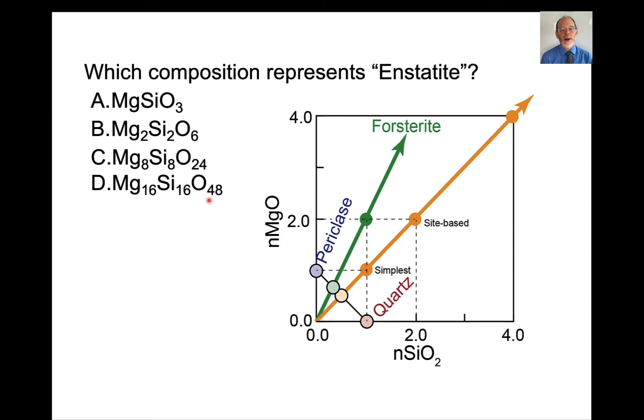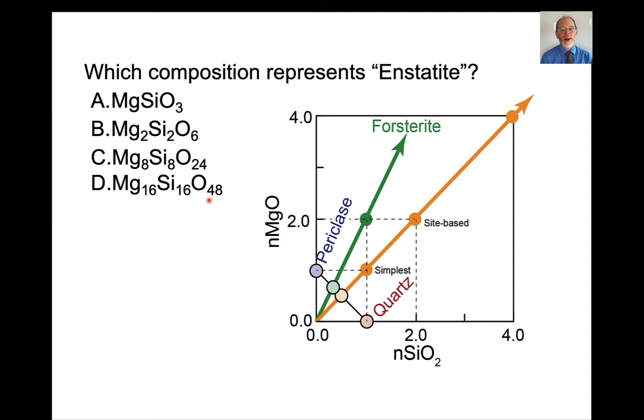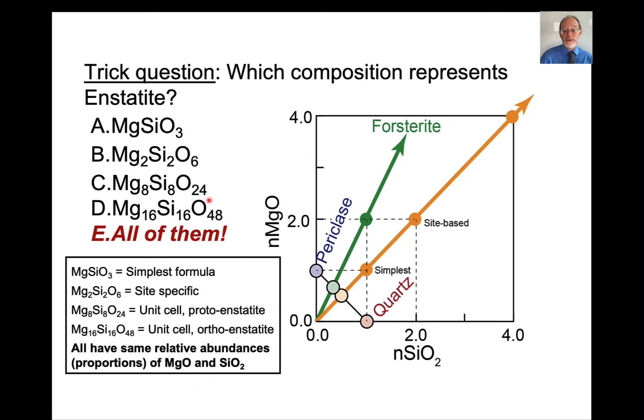Usually what we care about are the relative abundances of the oxide components, not the absolute amounts. So here for example is a question: which composition here represents enstatite? And the answer is all of them. They all can be used to represent enstatite. MgSiO3, that's the simplest way. Mg2Si2O6 is site specific. All of these technically convey different information, but they all have the same relative abundances, proportions of magnesium and silicon. And usually it's those relative proportions that we care about.